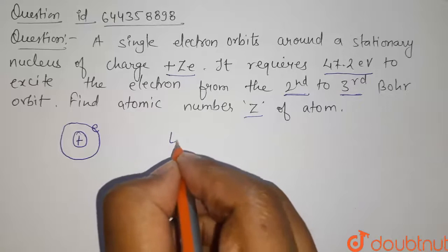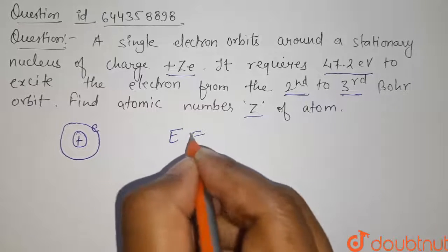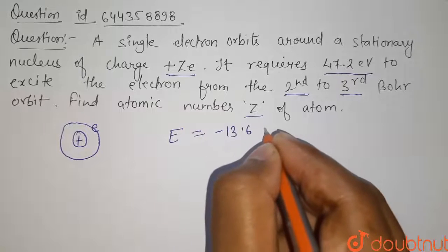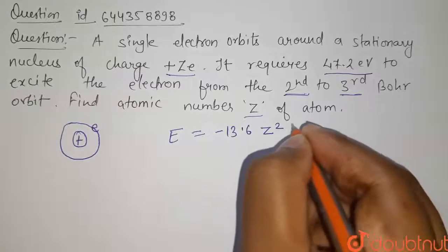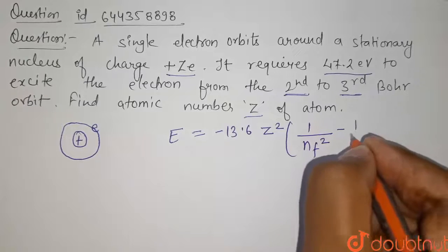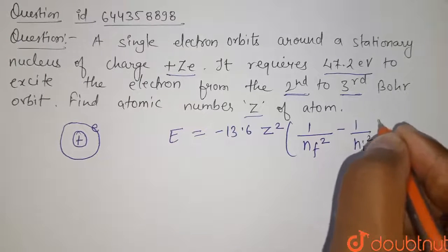We have the formula for energy that is given by E equals to minus 13.6 into Z square divided by 1 upon n final square minus 1 upon n initial square.